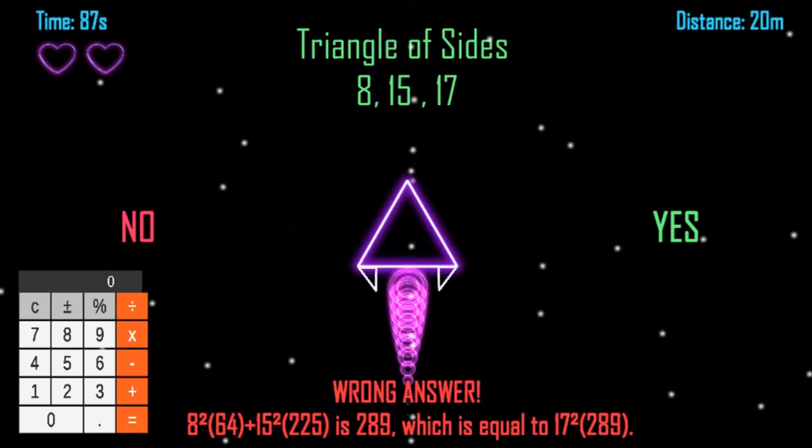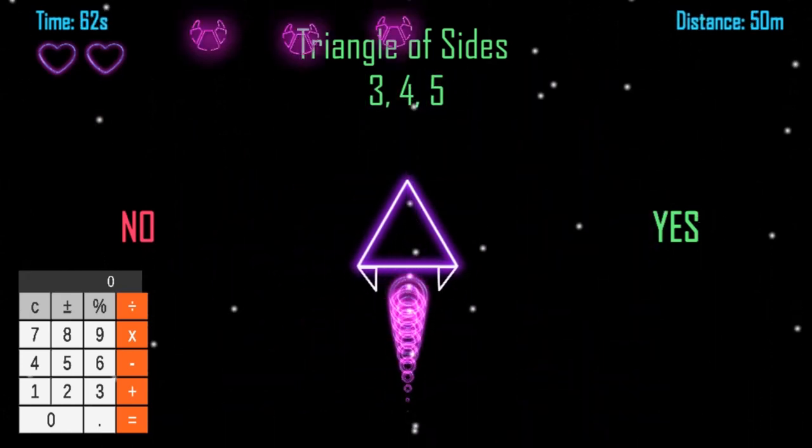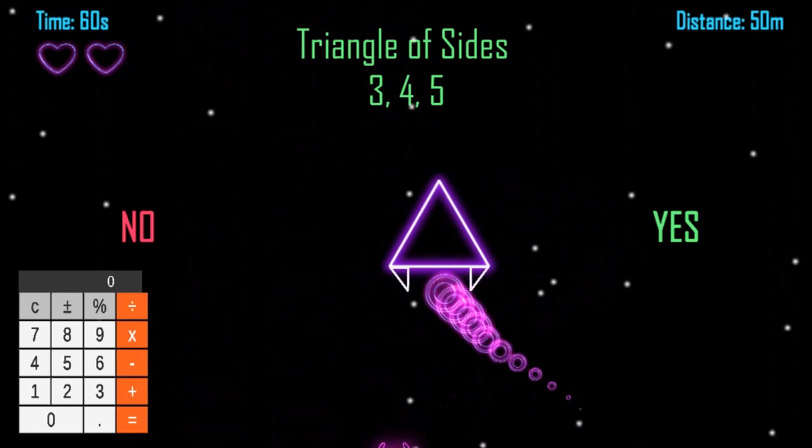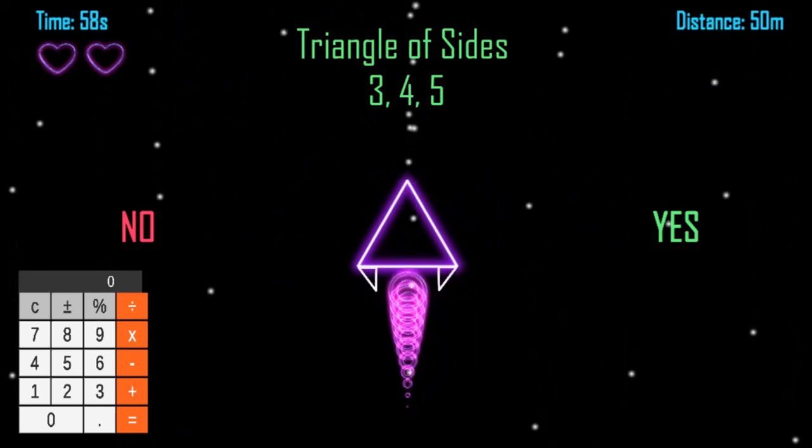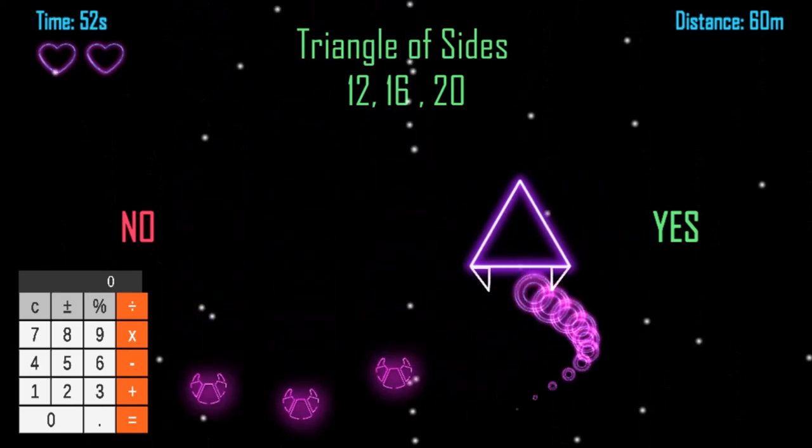Help the neon ship travel as far as possible. Your goal in this game is to use your knowledge of the Pythagorean theorem to help the neon ship travel. You will be given a triangle with values for each of its sides.